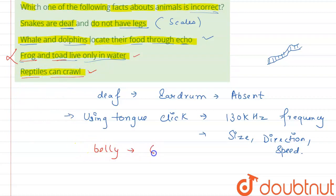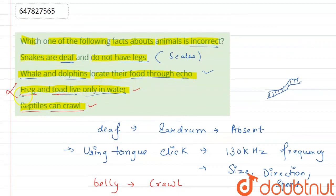Next is reptiles can crawl, which is correct. Reptiles crawl, which means they move along their belly. Crawl, which means they can do it. So this option is correct. So the incorrect option is only one: frogs and toads live only in water. So this is our answer. Thank you.